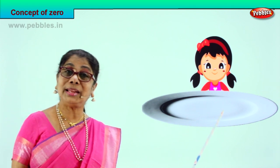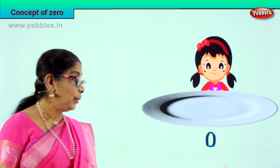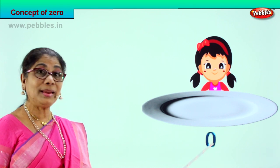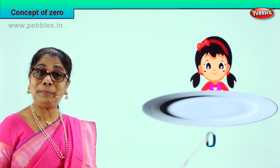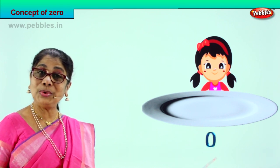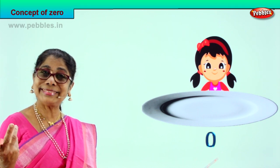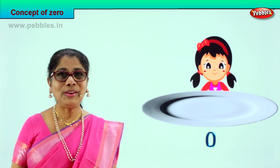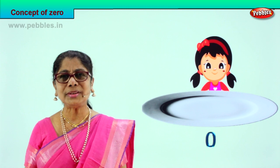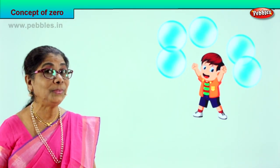She ate all three. So what is it in the plate now? How many are there? Zero. So we write zero here. Empty plate — zero, nothing, no mangoes left.